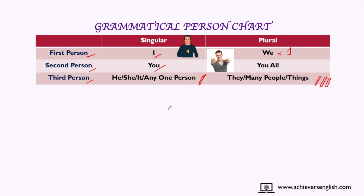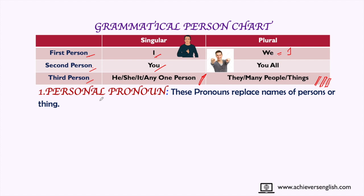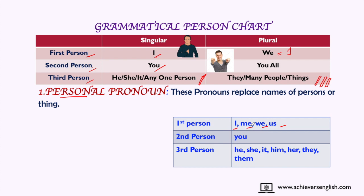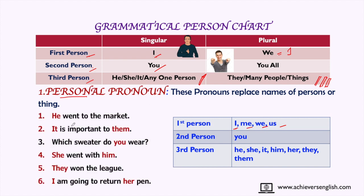Personal pronoun — the name itself suggests it is replacing a person. These pronouns replace names of persons or things. Examples: 'He went to the market. It is important to them. Which sweater do you want? She went with him. They won the league. I am going to return her pen.'